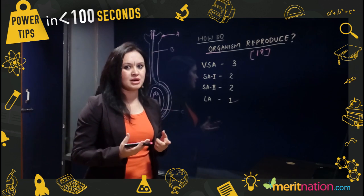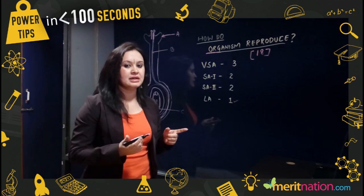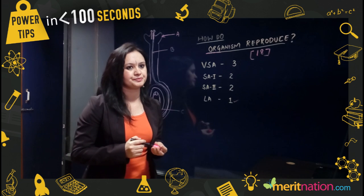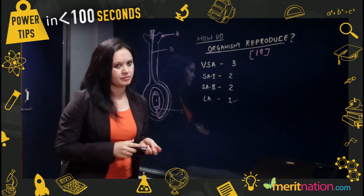For example, very short answer questions—there are three questions for one mark type. There are two questions that carry two marks and there are two questions that carry three marks. There is only one question that is a long answer type question which carries five marks. But ma'am, what kind of questions can we expect for long answers?